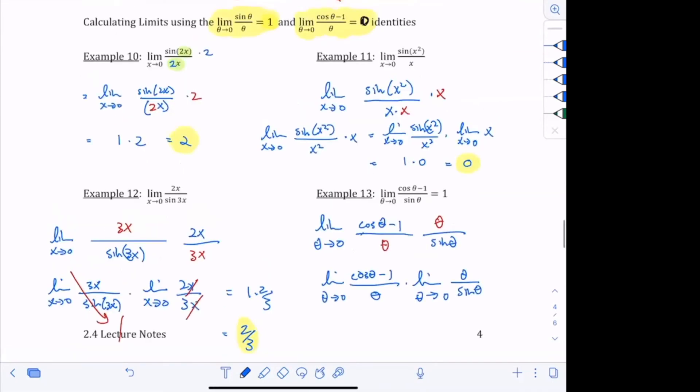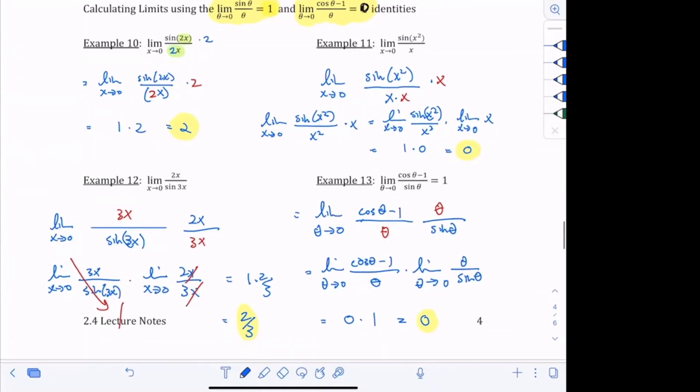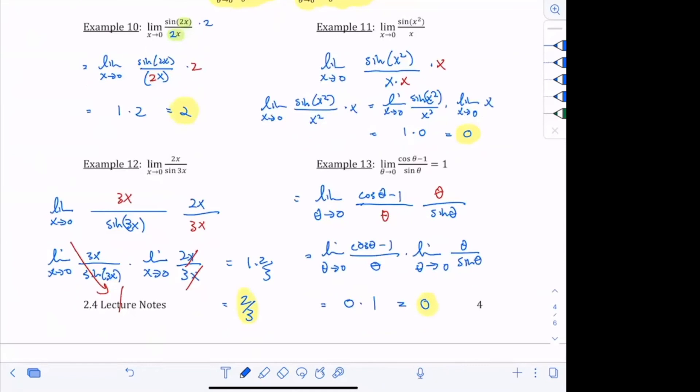And we know what each of those limits are. The first one, the limit is 0. And the second one, the limit is 1. 0 times 1 is 0. So that's what we get. Does that make sense? Any questions?